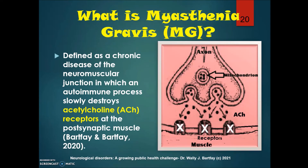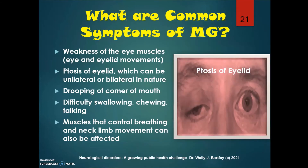What is Myasthenia Gravis (MG)? It is defined as a chronic disease of the neuromuscular junction in which an autoimmune process slowly destroys acetylcholine (ACh) receptors at the post-synaptic muscle. Common symptoms of MG include weakness of the eye muscles, eye and eyelid movements, ptosis of eyelids which can be unilateral or bilateral, drooping of the corner of the mouth, difficulty swallowing, chewing, and talking. Muscles that control breathing and neck and limb movement can also be affected with MG.